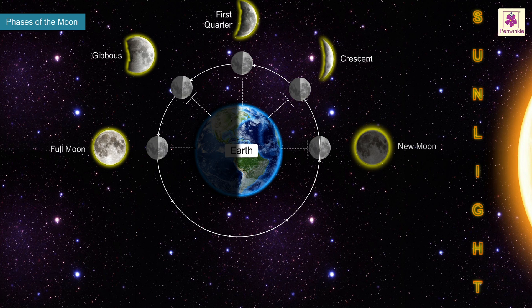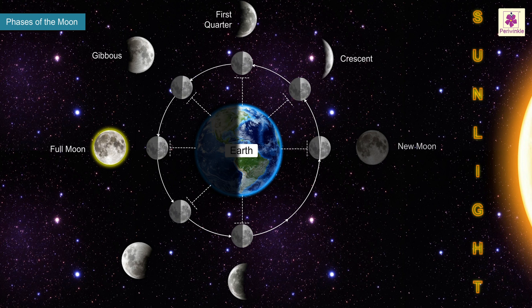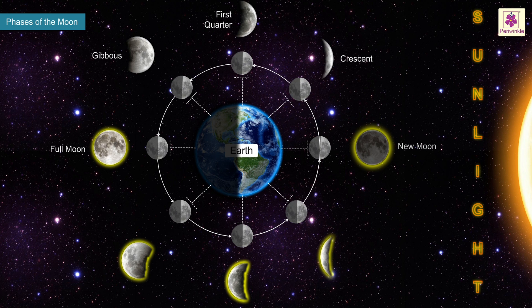After the full moon phase, the moon wanes, that is, the amount of illuminated surface as seen from Earth decreases. The lunar phases progress from the full moon, gibbous, third quarter, crescent, and return to the new moon phase.